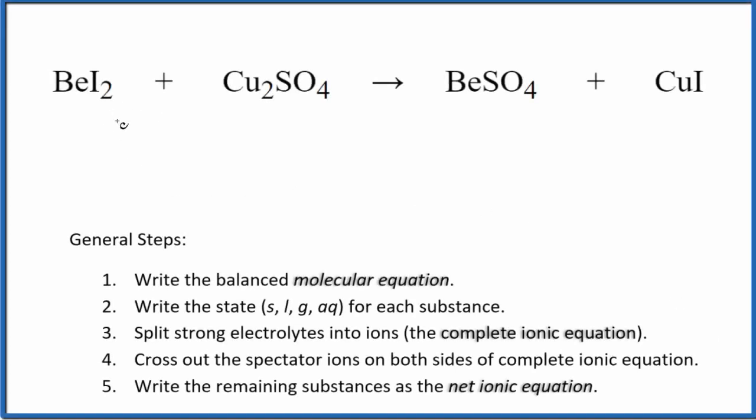Let's balance the net ionic equation for BeI2 plus Cu2SO4. This is beryllium iodide. This is copper 1 sulfate. That's because the sulfate is 2 minus, each one of the coppers has to be 1 plus, 2 times 1 plus to balance the charge. So copper 1 sulfate.